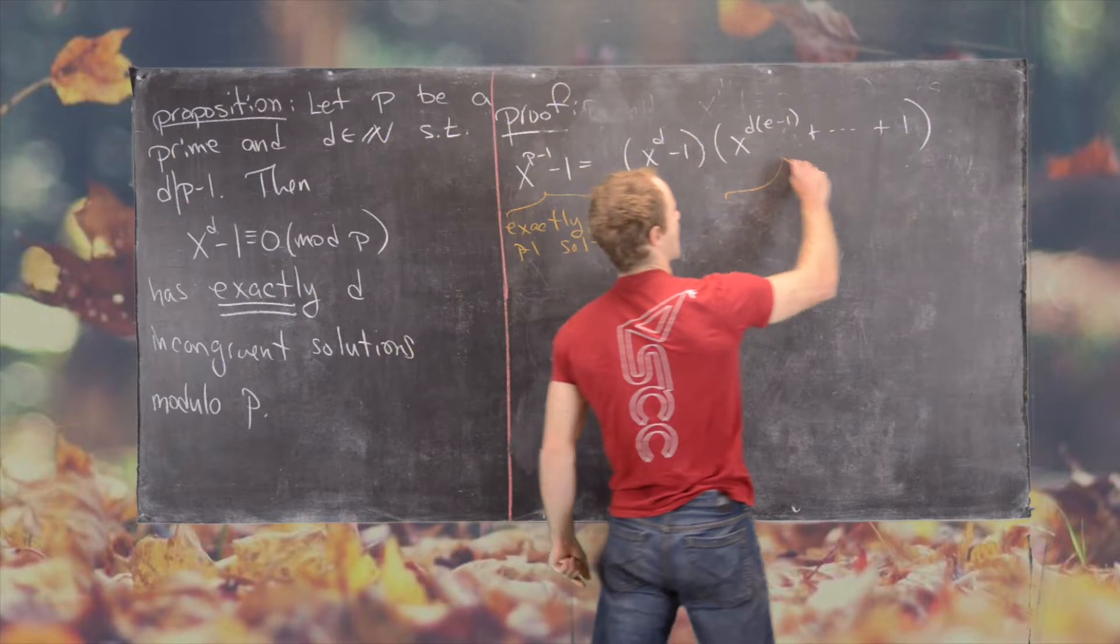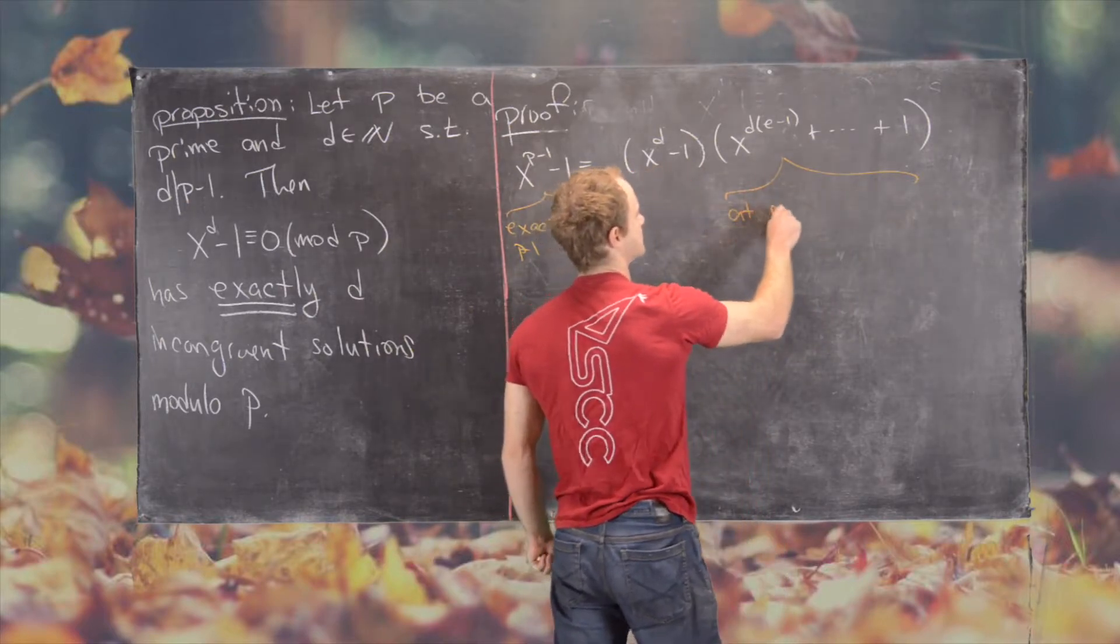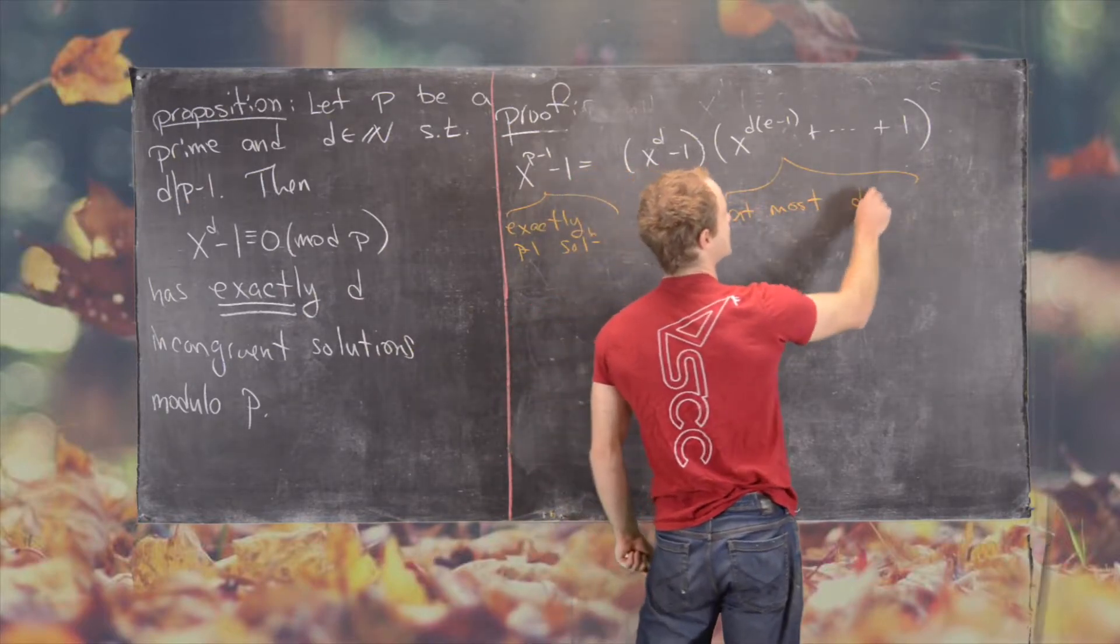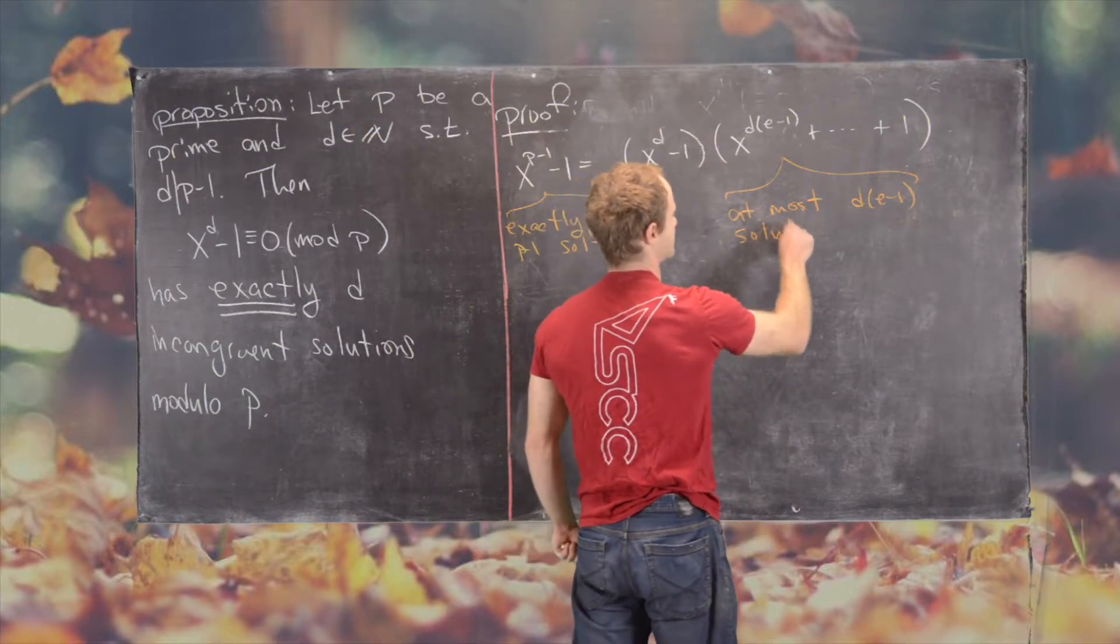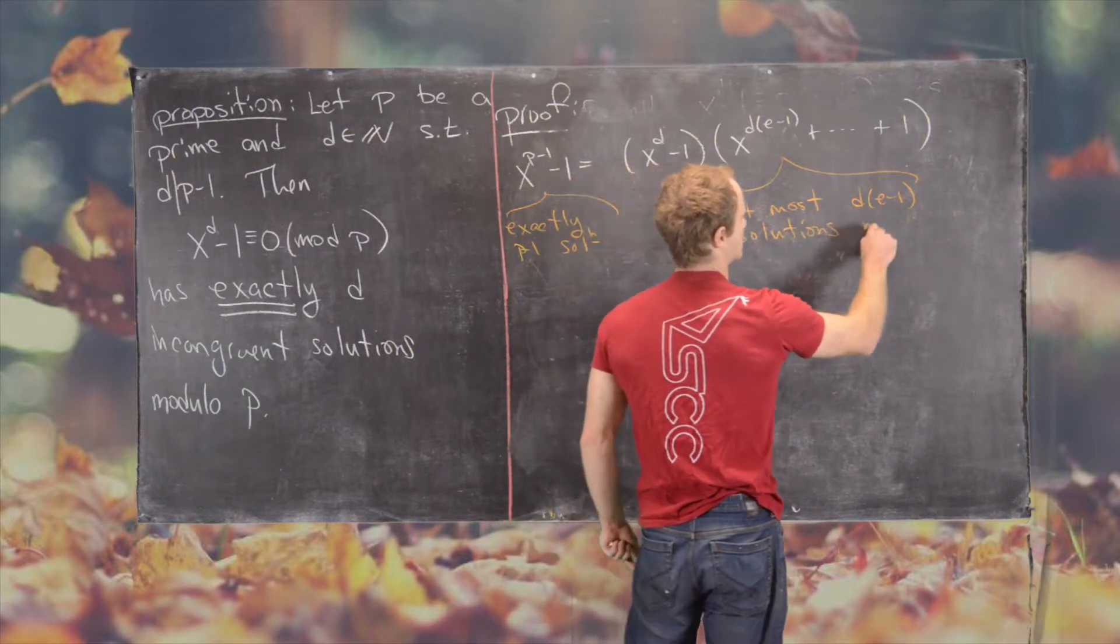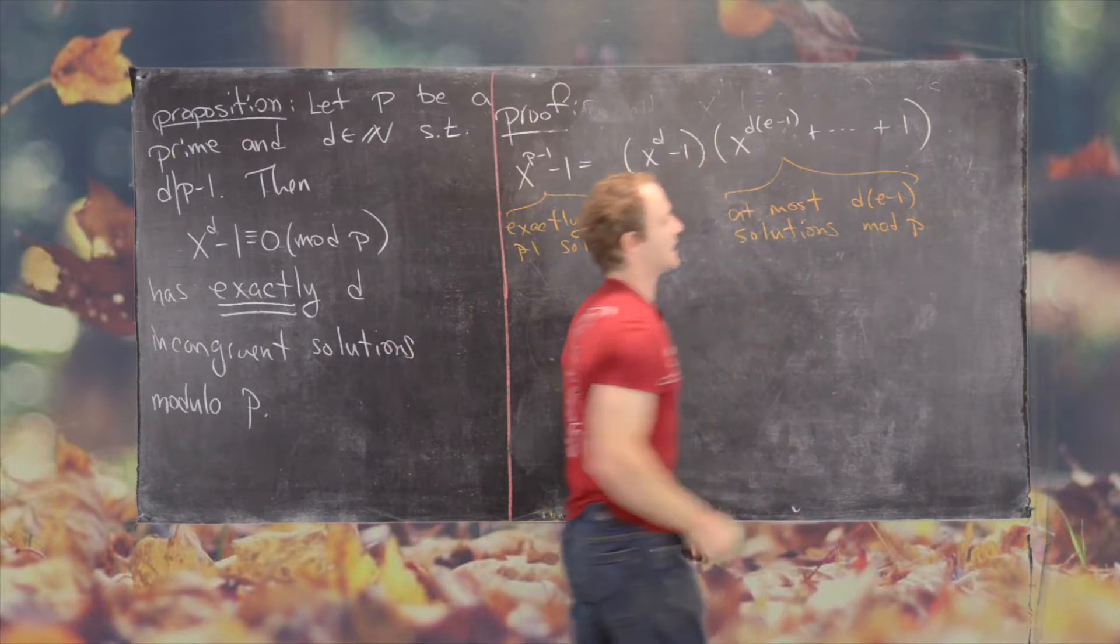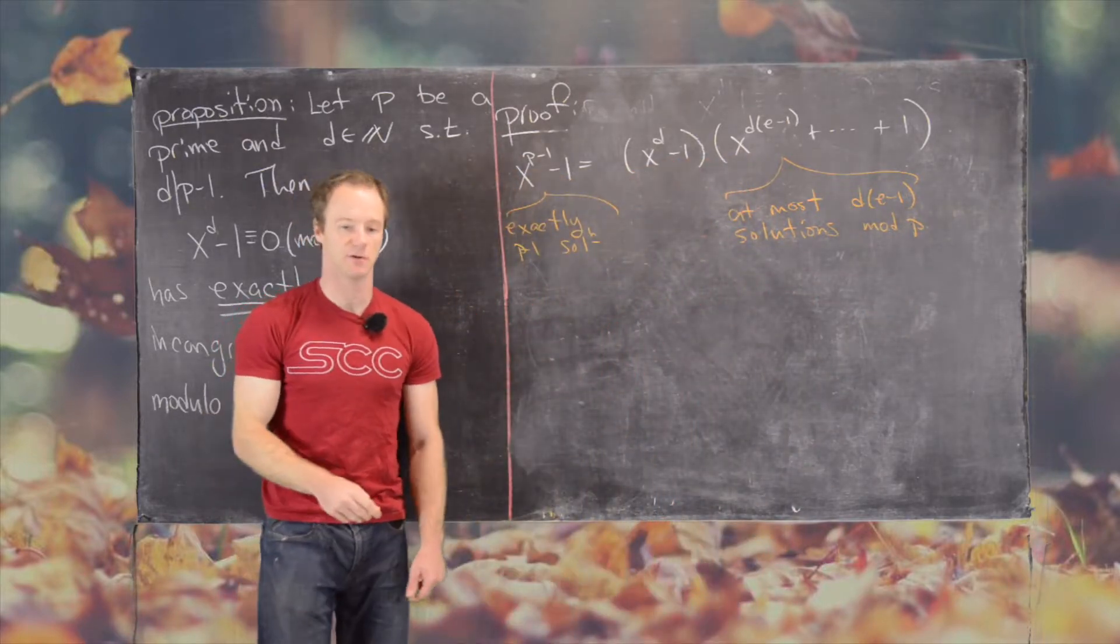And then furthermore, we know that this has at most d times e minus 1 solutions mod p. Again when we set that congruent to 0 mod p.